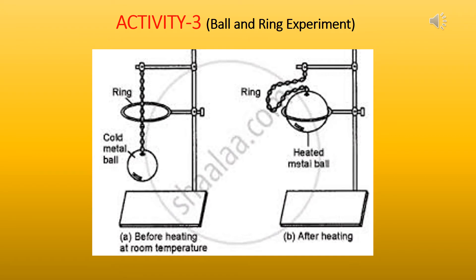Here we will discuss activity 3, which is given in your book. It is a ball and ring experiment. In this, we see that there is a ring and a cold metal ball. The cold metal ball easily passes through the ring. But after heating that metal ball and then making it pass through the ring, we see that it is stuck. This shows that the metal ball has expanded after heating and its volume has changed. Now it can no longer pass through the ring.